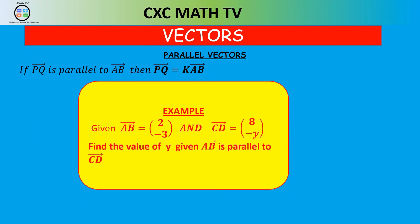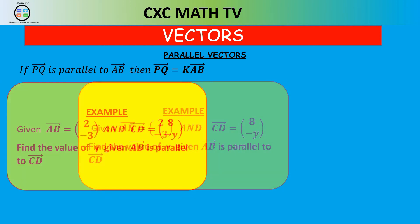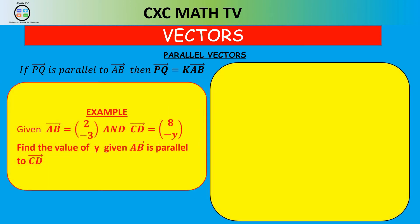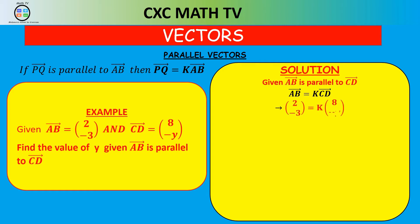Here's one for you to try: find the value of Y given that vector AB is parallel to vector CD, where AB = (2, −3) and CD = (8, −Y). Since AB is parallel to CD, we know AB = K × CD. So (2, −3) = K × (8, −Y). Grouping the X components: 2 = 8K.